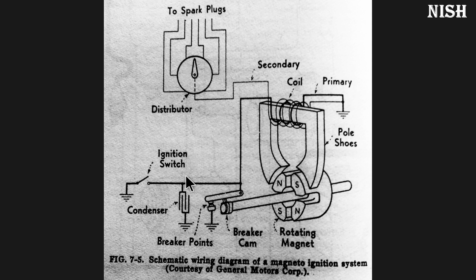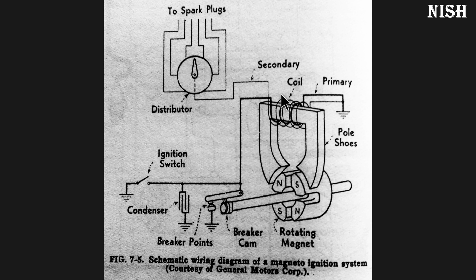The circuit diagram of battery ignition and magneto ignition is the same, except that the magneto directly supplies current instead of a battery. The main parts we can see in the construction are: the breaker point, the ignition switch, the magneto which generates current when rotated, the ignition coil with primary and secondary windings, the spark plug, and the distributor.